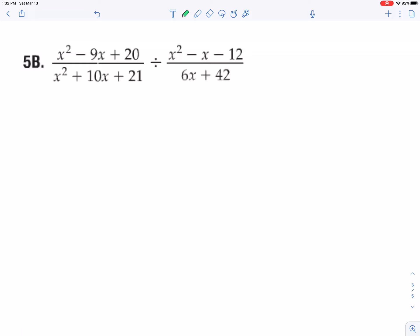I also know that that's the same thing as just taking the second fraction and rewriting it with multiplication after flipping it. So x squared minus 9x plus 20 over x squared plus 10x plus 21, and I'm going to now be multiplying by 6x plus 42 over x squared minus x minus 12. You notice I just flip-flopped those.